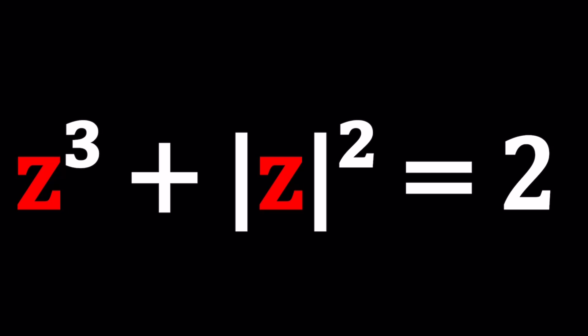One thing to keep in mind though, absolute value of z squared is real, but z may not be real. Or is z real as well? Because z cubed plus absolute value of z squared is equal to a real number, that doesn't mean z is real. It just means that 2 minus z cubed is real. Does that give you an idea? Hopefully it does. Let's proceed.